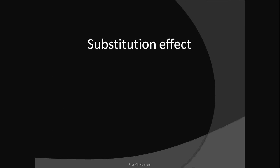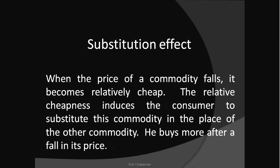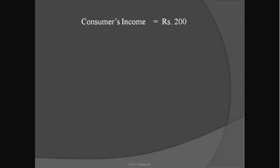Substitution effect is also a reason for the indirect relation between price and quantity demanded. When the price of a commodity falls, it becomes relatively cheap. The relative cheapness induces the consumer to substitute this commodity in place of other commodities, so he buys more after a fall in its price. Let us understand this with the help of a numerical example.